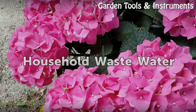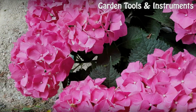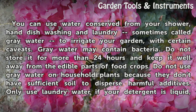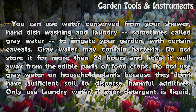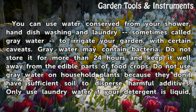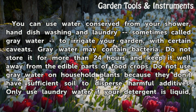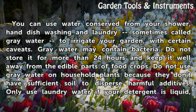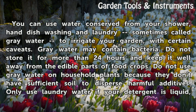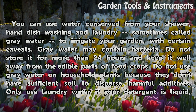You can use water conserved from your shower, hand dish washing, and laundry — sometimes called grey water — to irrigate your garden with certain caveats. Grey water may contain bacteria. Do not store it for more than 24 hours and keep it well away from the edible parts of food crops. Do not use grey water on household plants because they don't have sufficient soil to disperse harmful additives.